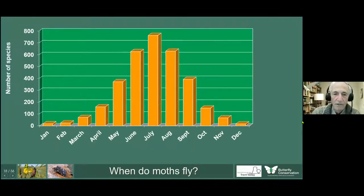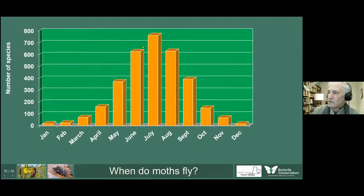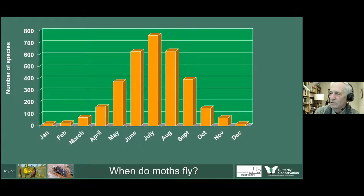When do moths fly? Numbers start small in January and February and build up to a peak in July and August. If you're going to start looking at moths for the very first time, the last thing you should do is start in July and August — your mind will be blown by the sheer number of moth species in the trap. It's far better to start early in spring when species numbers are relatively small and easy to deal with, adding new species gradually as the year progresses.